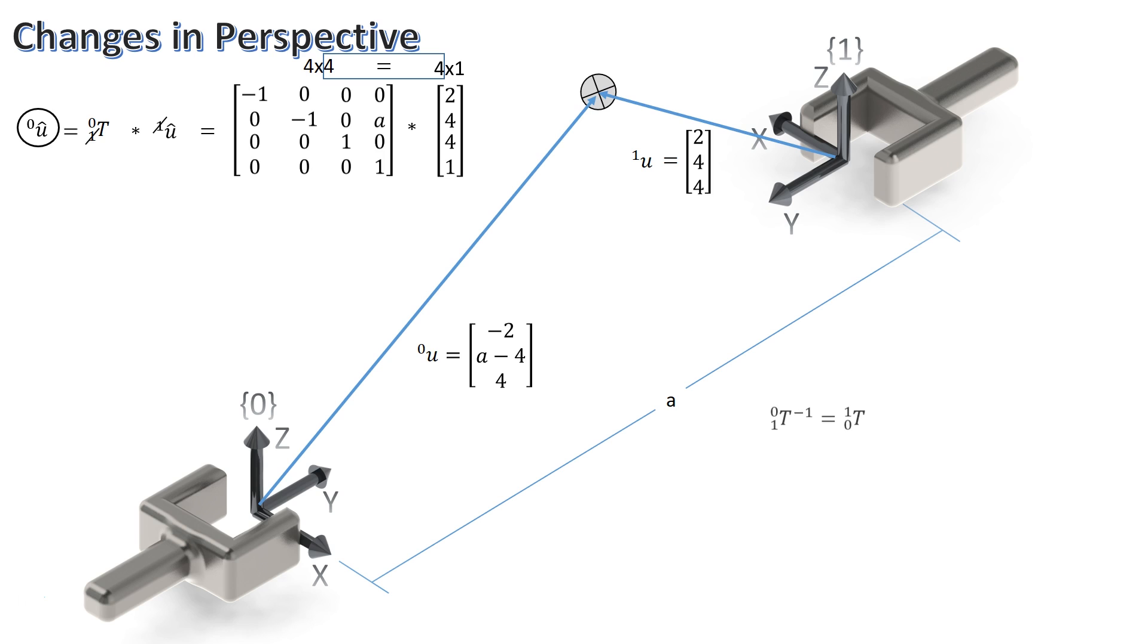Another cool property of transformation matrices is that you can switch the source and destination of a transformation by taking its inverse. It just so happens if you did this for the transformation we've been working with, it becomes the same matrix. Because the transformation is now from frame 1 to frame 0, we can multiply by vector u with respect to 0 to get vector u with respect to 1 if that was a vector that was originally unknown.